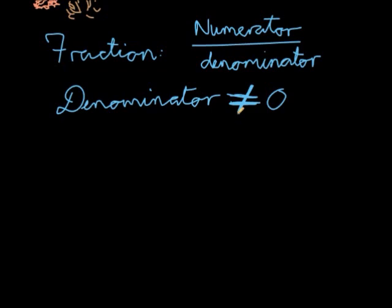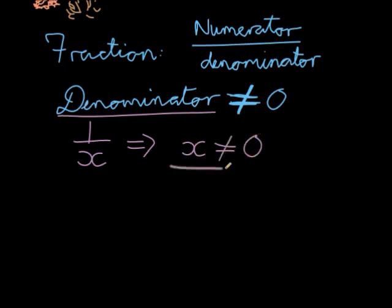So let's look at an example. I might have something like 1 over x. My denominator is what? x. x may not equal zero. So here I already have it quite easily. My denominator may just not be equal to zero.